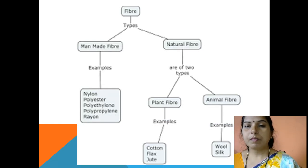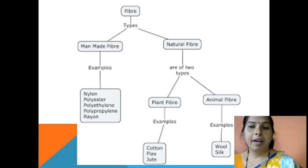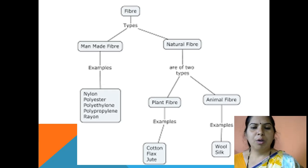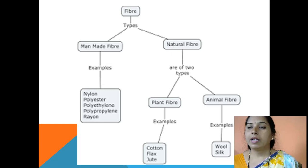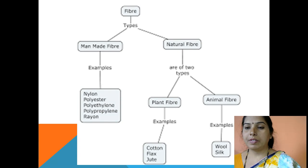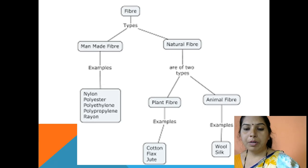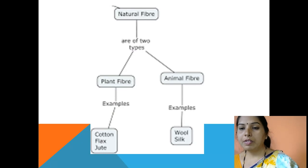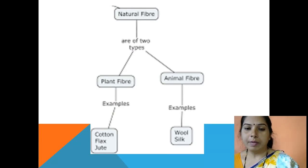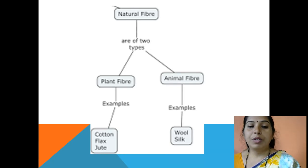Here is a flowchart of fibers — manmade fiber and natural fibers. Manmade fiber examples: nylon, polyester, polyethylene, polypropylene, rayon — those won't be discussed here. Natural fibers are of two types: plant fiber and animal fiber. Plant fiber gives us cotton, flax, and jute. Animal fibers — for example wool and silk — are what we have to discuss here in detail.